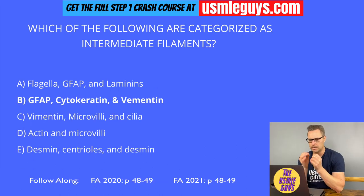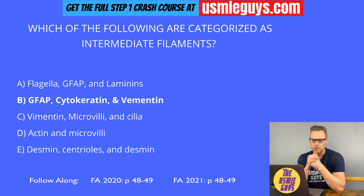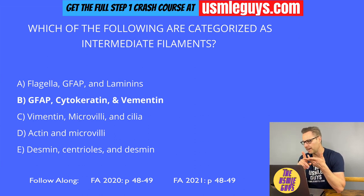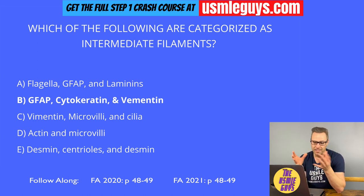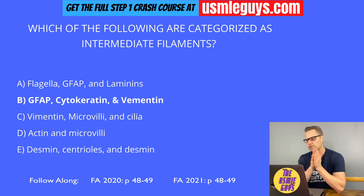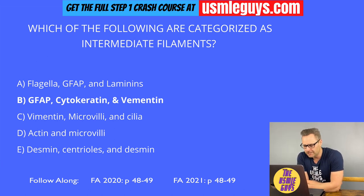The correct answer here is B. Cytoskeletal elements are a network of protein fibers in the cytoplasm that aid in supporting cell structure, cell and organelle movement, and cell division. Microfilaments are used in cytokinesis and muscle contraction — examples include microvilli and actin. Intermediate filaments maintain cell structure — think neurofilaments or cytokeratin. Microtubules are needed for cell division and cell movement — cilia, flagella, and the mitotic spindle are good examples.